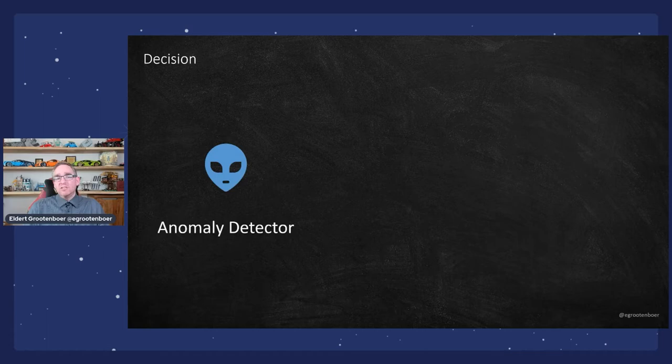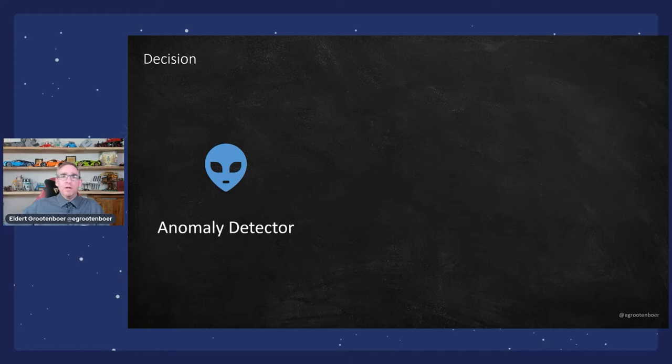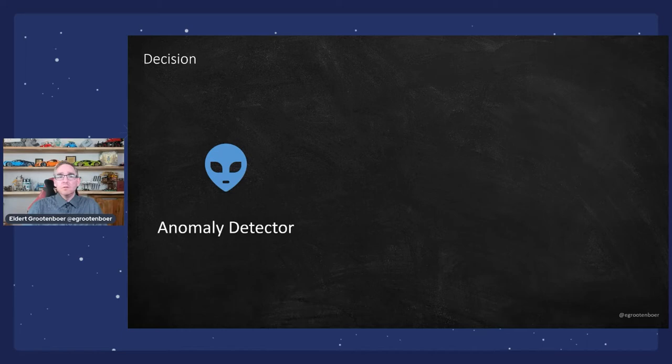The first one is the Decision API, which has an anomaly detector that allows us to find outliers in our data. For example, if I have a stream of credit card transactions, with the anomaly detector I can see some strange transaction — like if I'm normally only paying in Rotterdam and all of a sudden I'm paying in New York and then in China. This service can help detect these outliers and trigger a warning, and I might block that credit card.